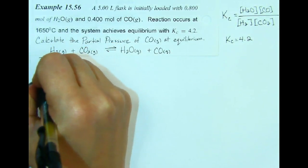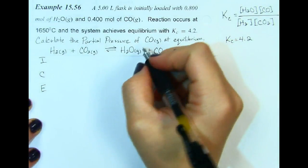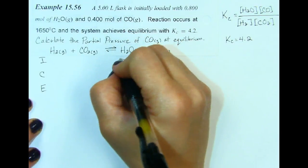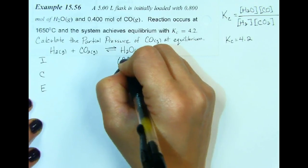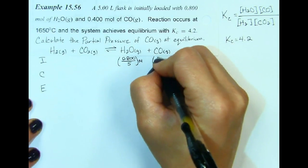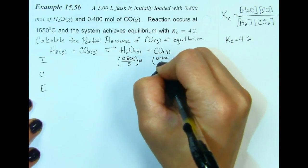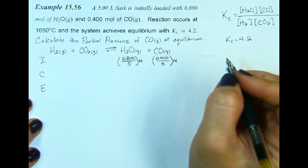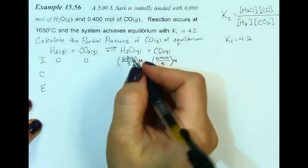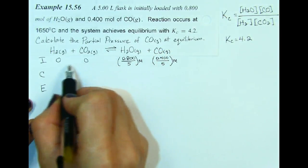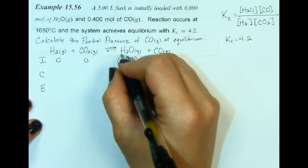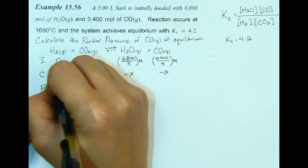Let's make our ICE table. We're told that initially we have 0.8 moles of water in a 5-liter flask. Remember, we need this to be a molarity — moles divided by liters gives us molarity. The carbon monoxide is 0.4 moles over 5 liters. Since this is what we have initially, we can assume we have 0 of the products. The system is moving toward the left, so we have minus x, minus x for these two, and plus x, plus x for the others.